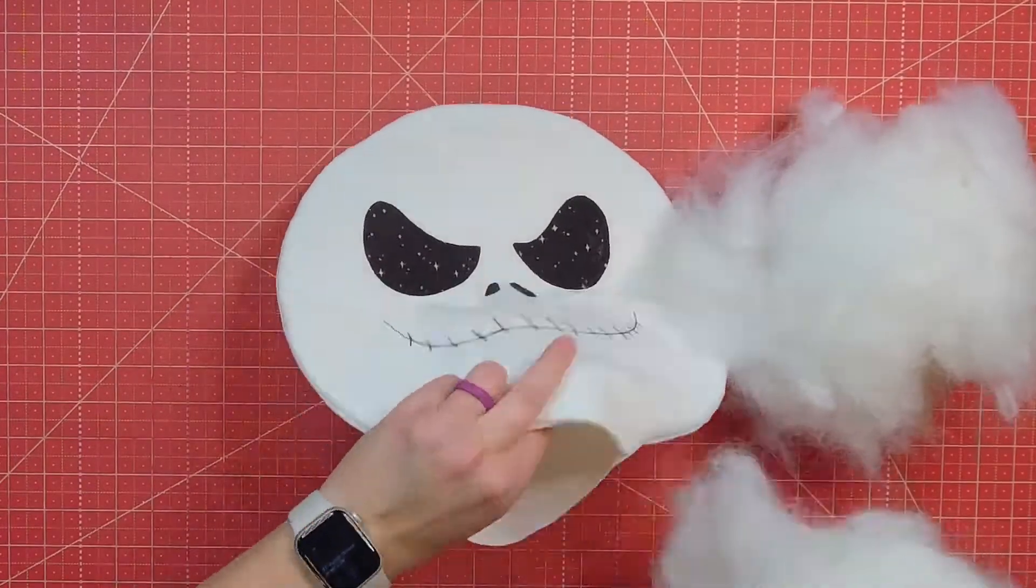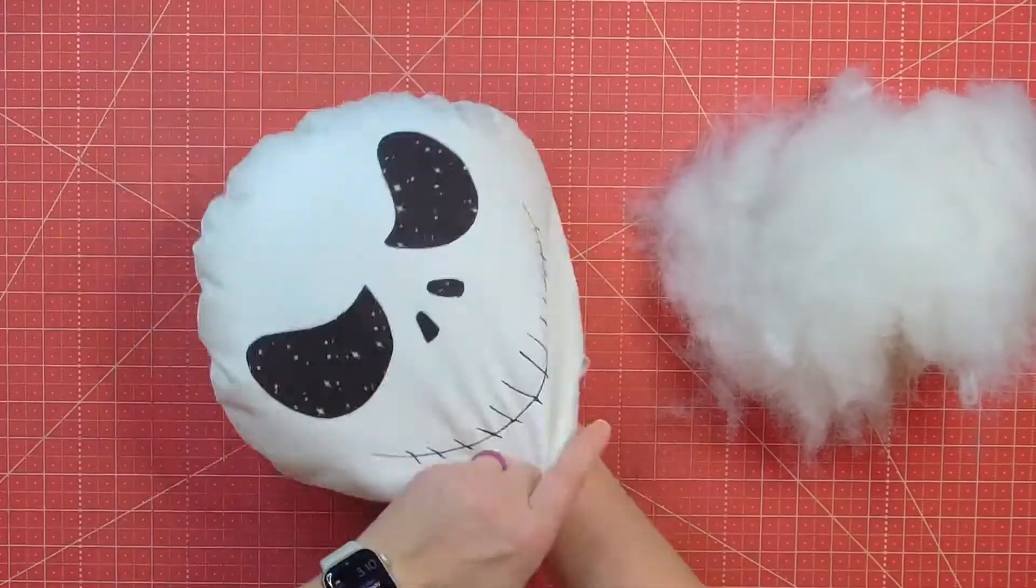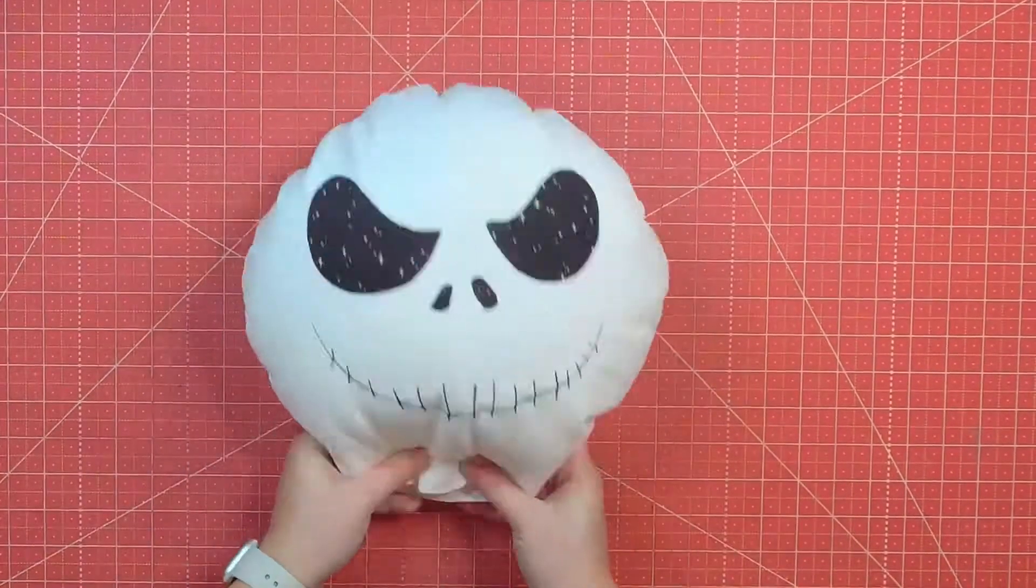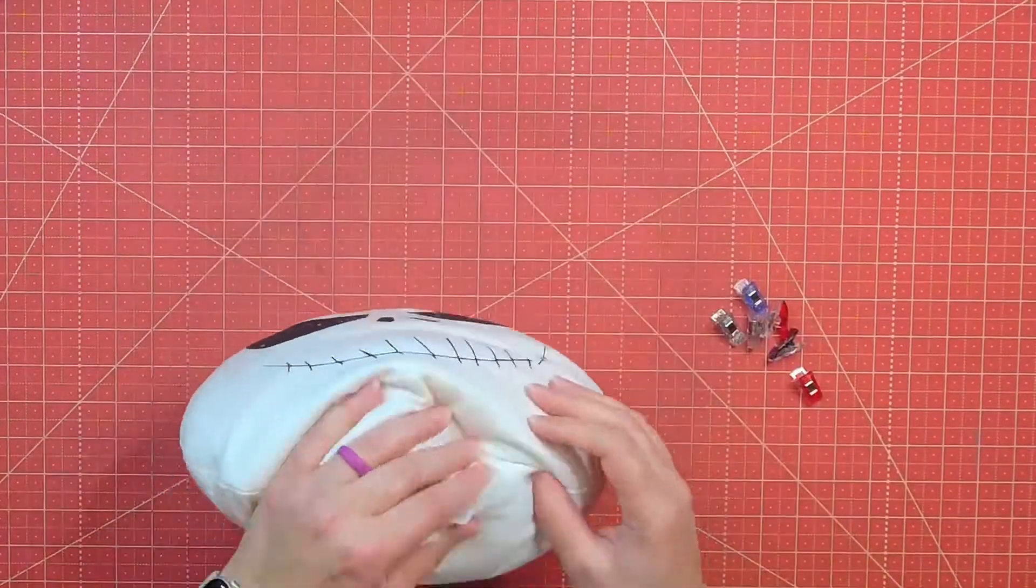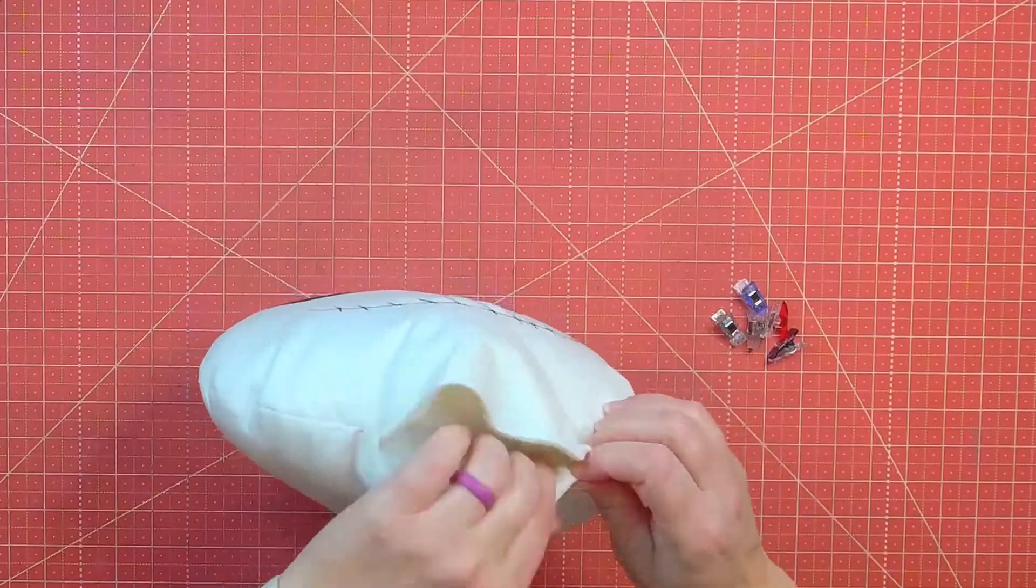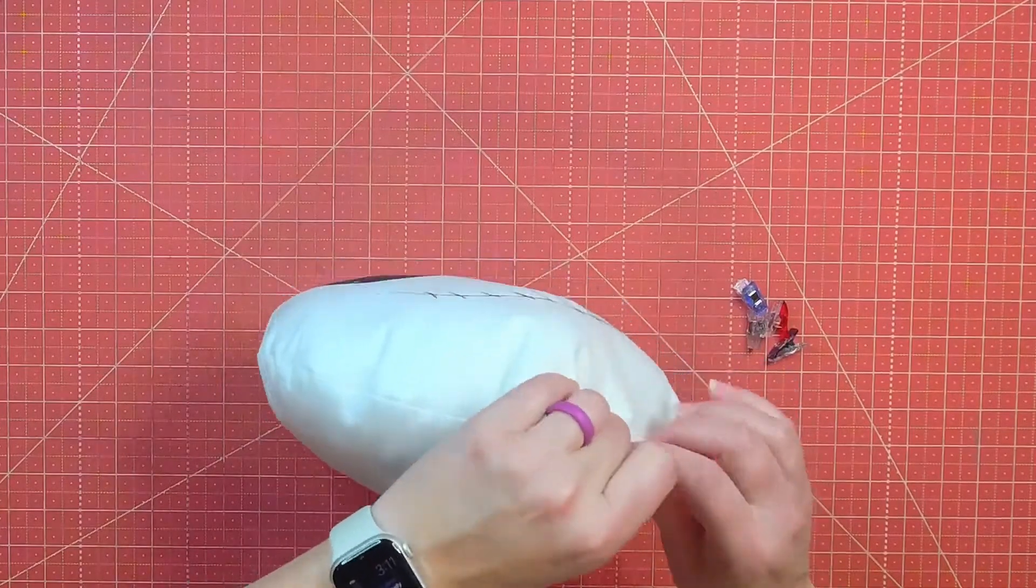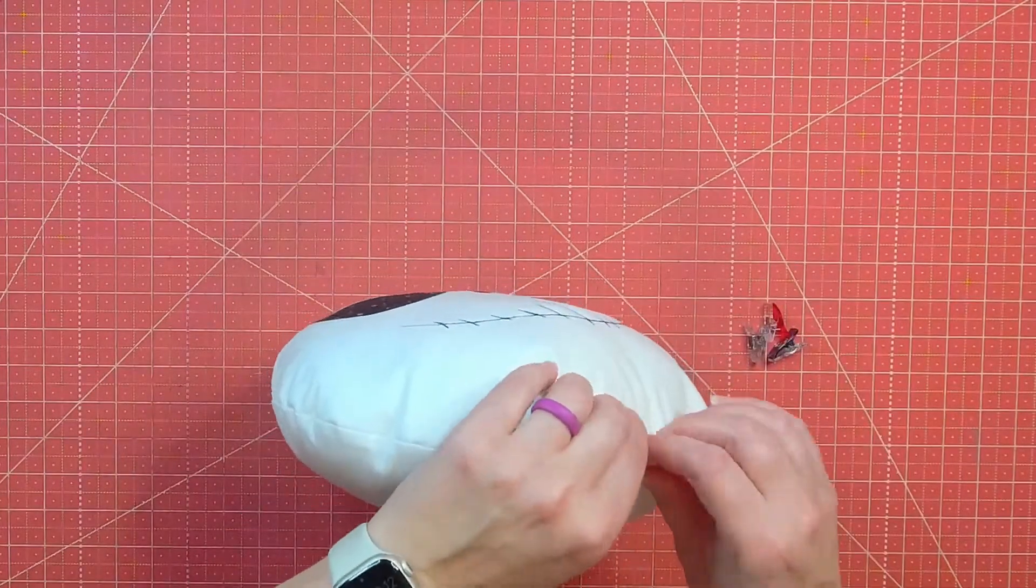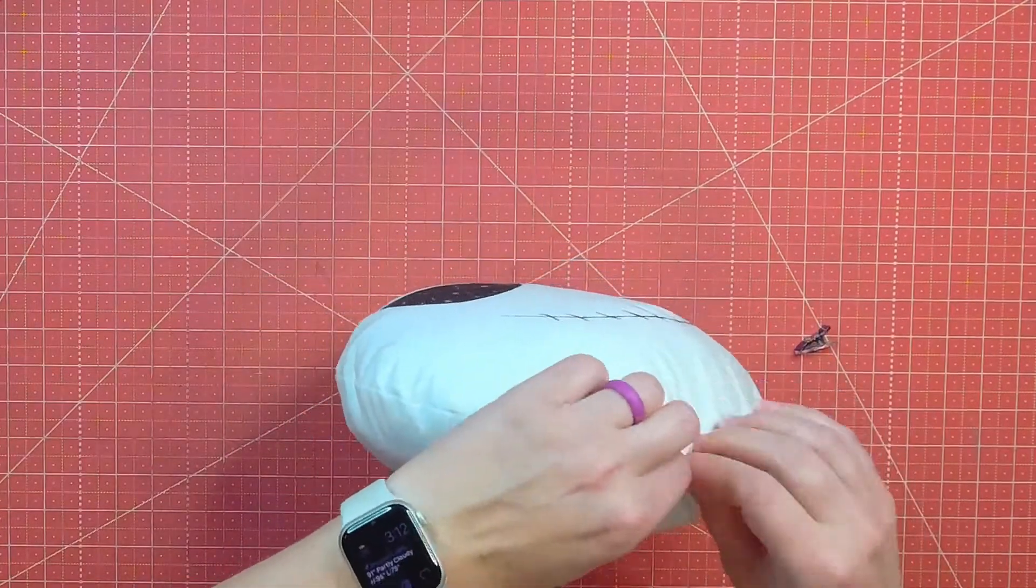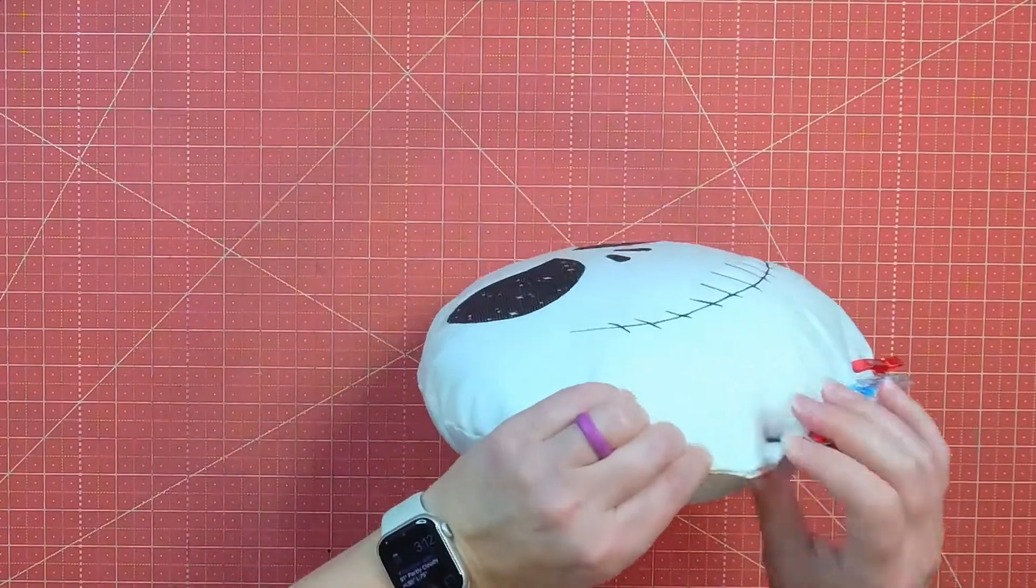So I'm just using this fluff, this polyfill fluff, and I'm going to stuff this pillow as full as I can comfortably stuff it just so it's nice and cozy pillow. So after I stuff the pillow nice and full, I'm just going to fold the open area about a quarter of an inch in and use some clips to hold it closed. And then I'm just going to hand stitch it closed just to make it nice and easy.